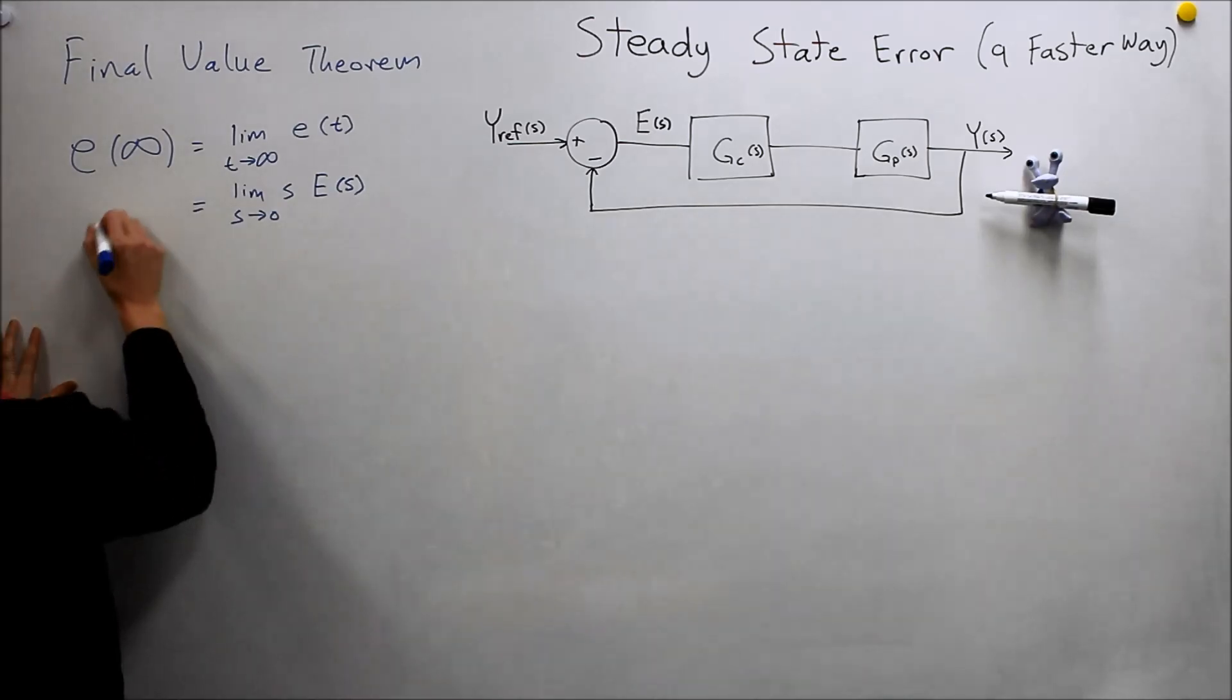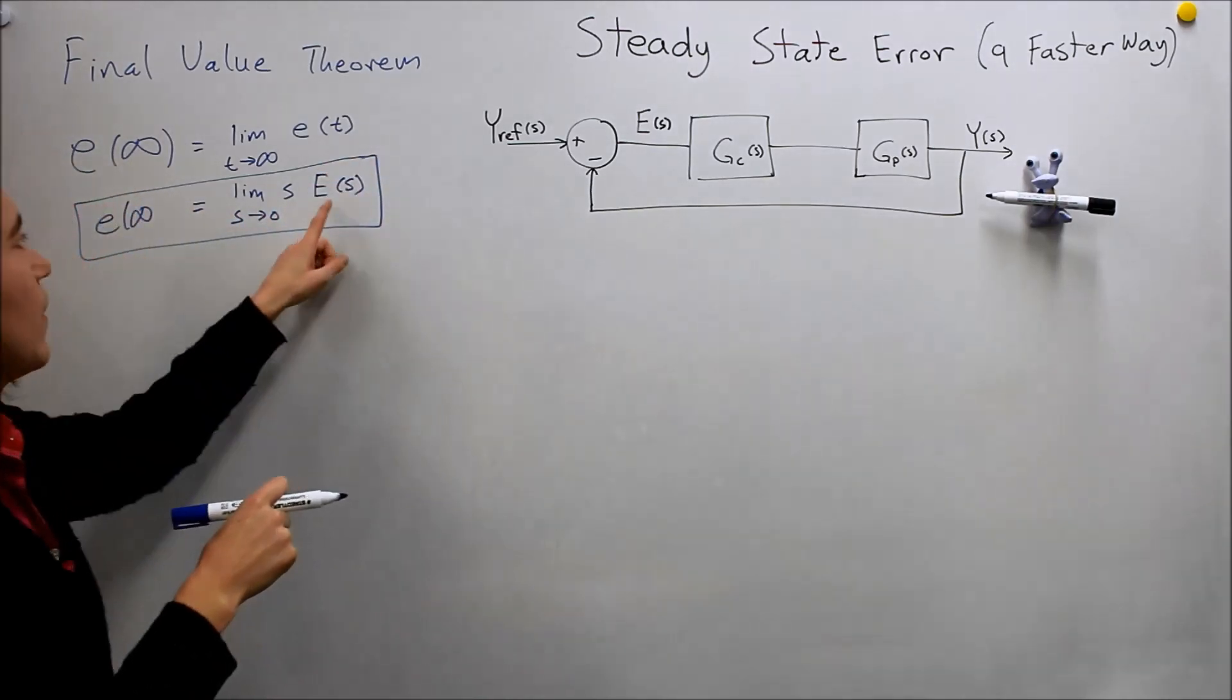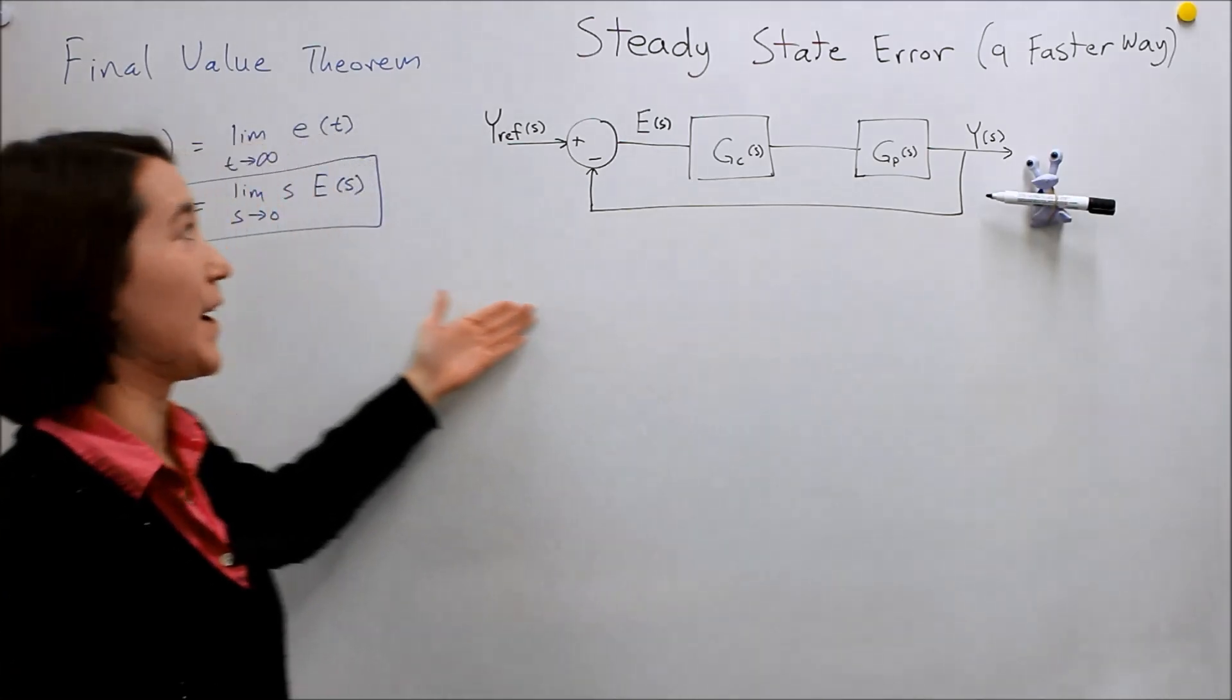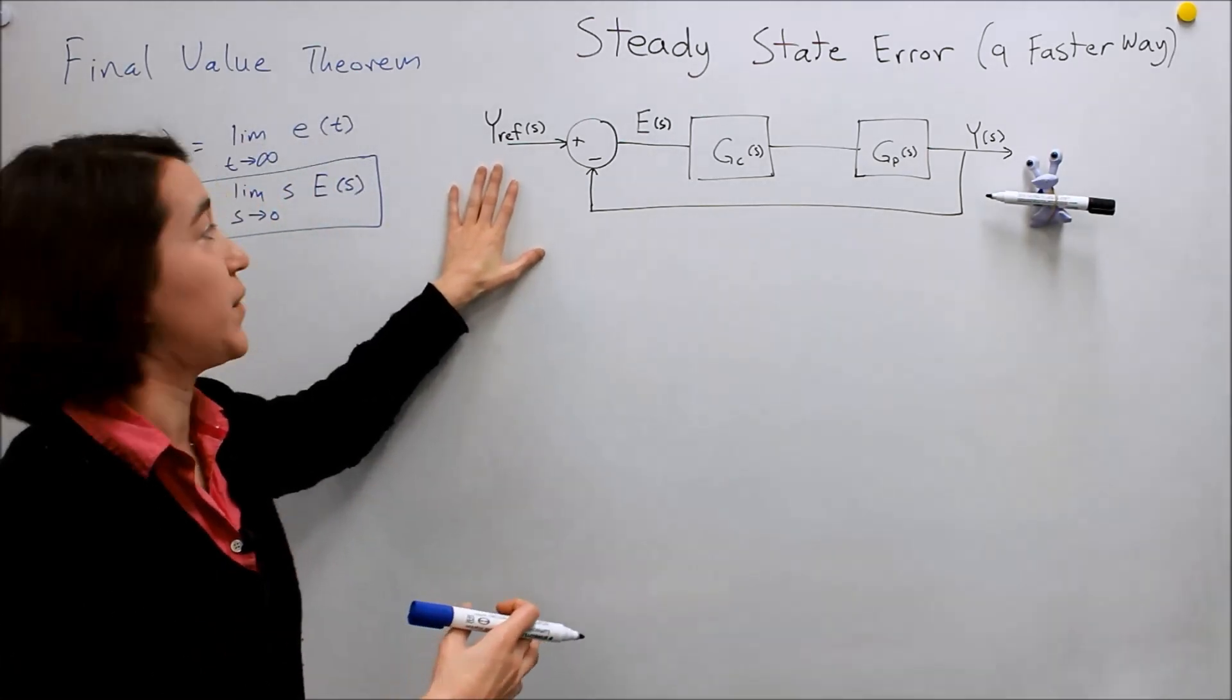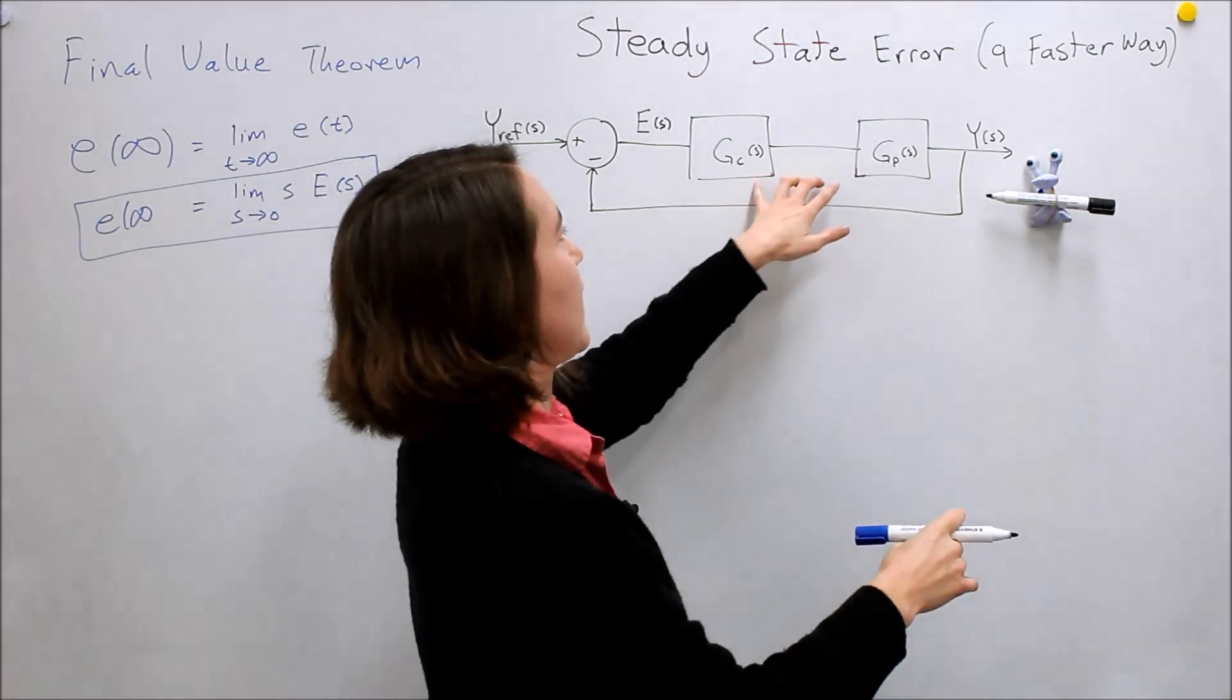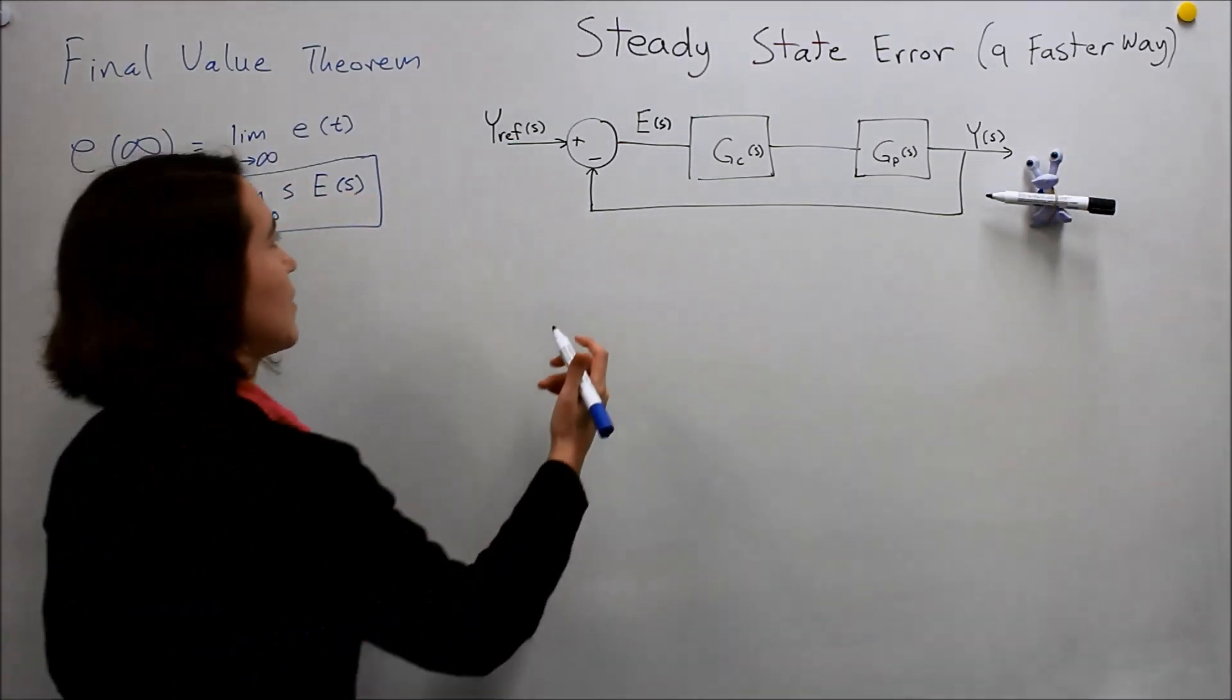Next, what we have to do is, I'll box this because this is important. The next thing we have to do then is figure out the expression for this e of s in terms of things that we know. So if we look at our basic feedback diagram here, we know our reference, we know what reference we're going to be putting into it. And we want to see the steady state error based off of that. We may also, if we know these values already, we've already calculated the transfer function for these two things, we can find an expression for e of s. So let's do that first.